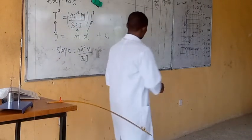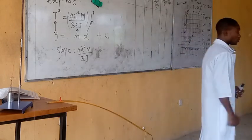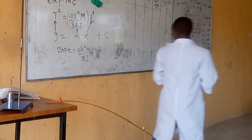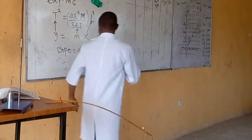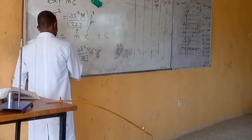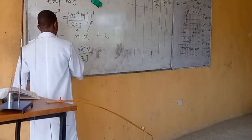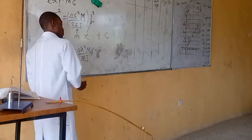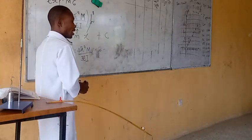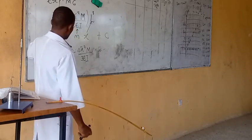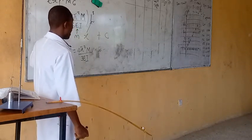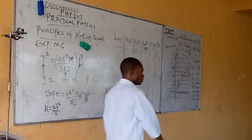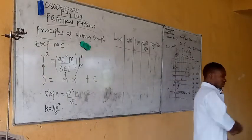Now proceed with the theoretical instruction. Evaluate k equals 4π² over s. You are meant to evaluate k equals 4π² over s. So k equals 4π² over s.